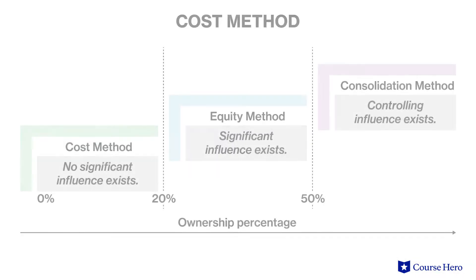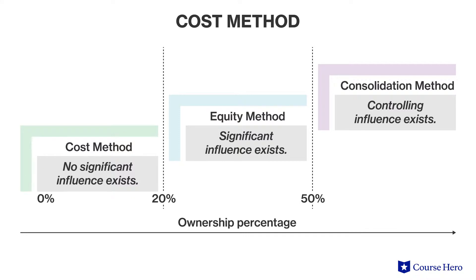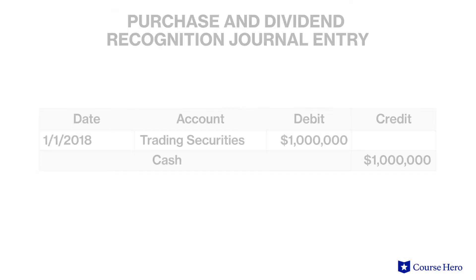If the level of ownership and influence is not significant, understood as less than 20% of the investee's outstanding stock, then the investment is accounted for using the cost method. In these situations, the investment is first recorded at cost and then carried at fair value. Therefore, if the value of the investment increases or decreases, the investment will be written up or down on the balance sheet to reflect fair value.